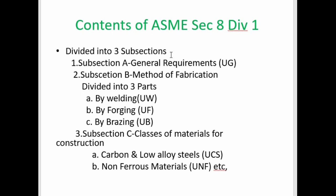As we all know, the contents of ASME Section 8 Division 1 are divided into three subsections: Subsection A, which covers general requirements; Subsection B, which covers methods of fabrication, divided into Part A by welding (UW), Part B by forging (UF), and Part C by brazing (UB); and Subsection C, classes of material for construction, which includes option A — carbon and low alloy steels, denoted as UCS.